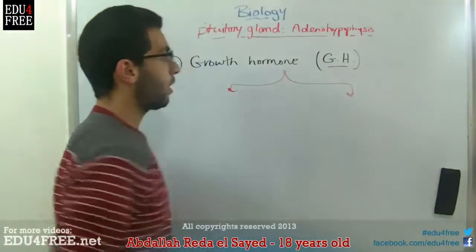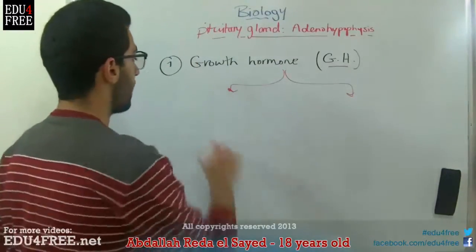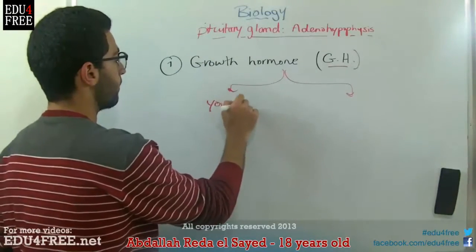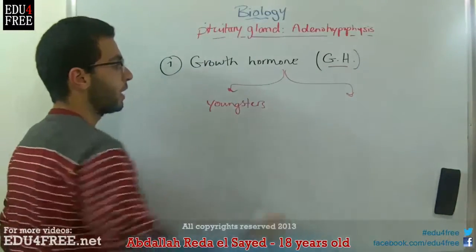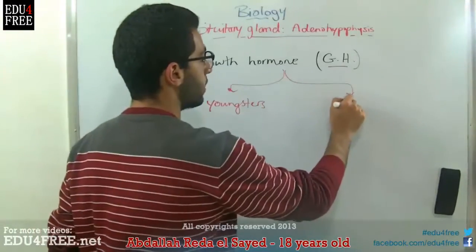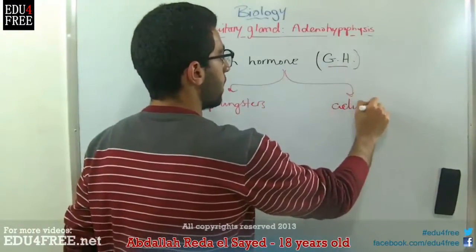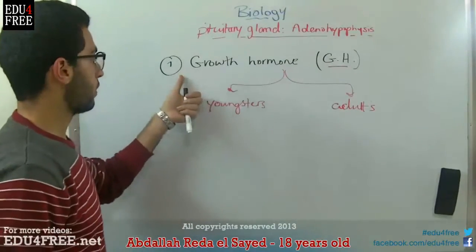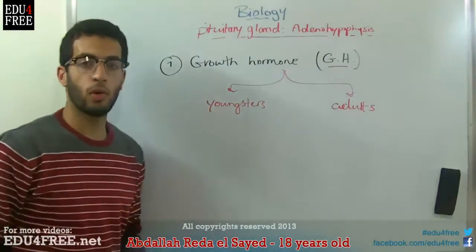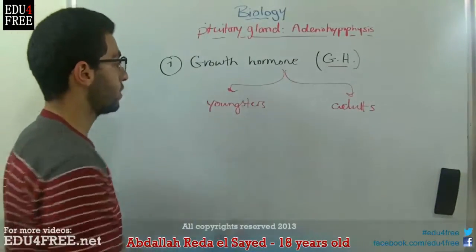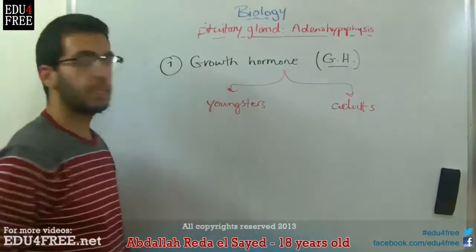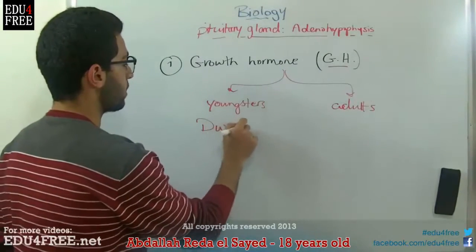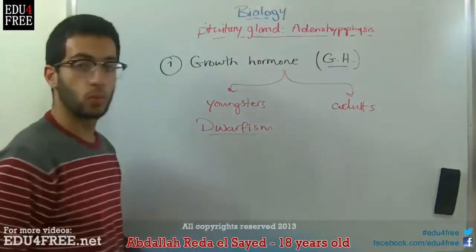We will look at the effects of growth hormone in two cases: in youngsters or childhood, and in adults. If there is a hyposecretion of growth hormone — meaning the growth hormone is not produced sufficiently and is produced in a very little amount — this leads to a condition called dwarfism, where the person grows to be a dwarf.